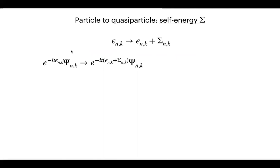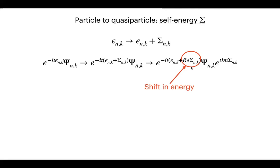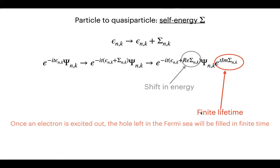What does the self-energy do? When you add it to your wave function time evolution, it does two things: the real part gives a shift in the energy, and the imaginary part gives a finite lifetime. The finite lifetime corresponds to the fact that once you excite an electron out of the material, the hole left in the Fermi sea is filled over time. This is partly why the method is called dynamical mean field theory — there is a sense of time dependence.